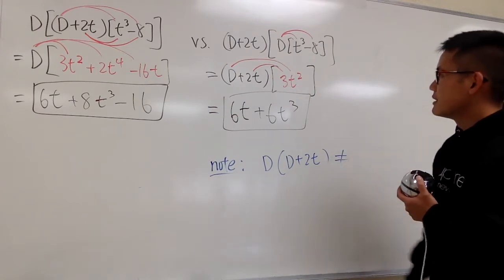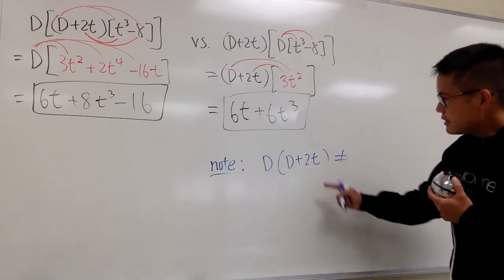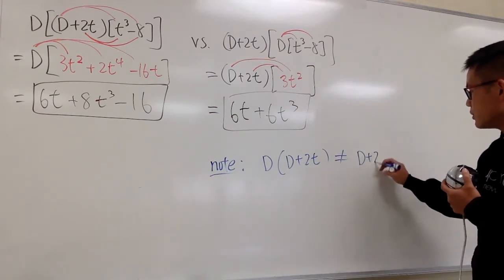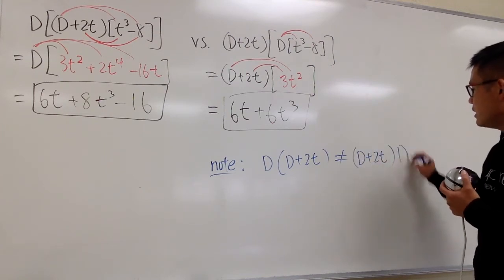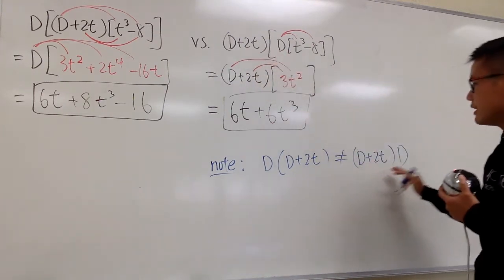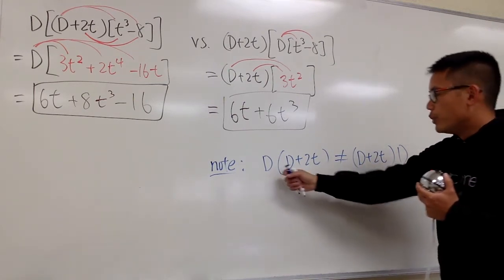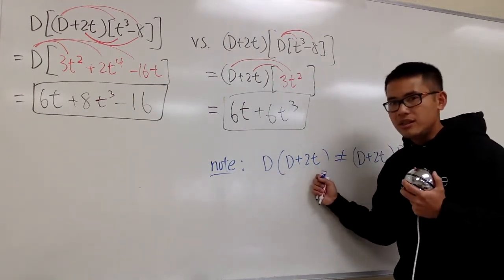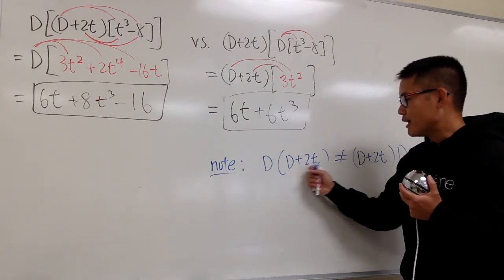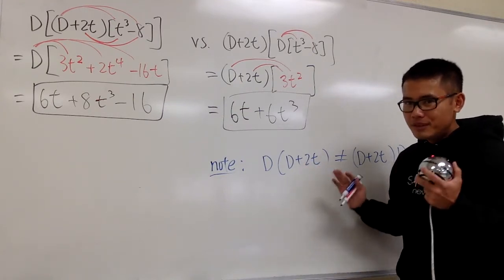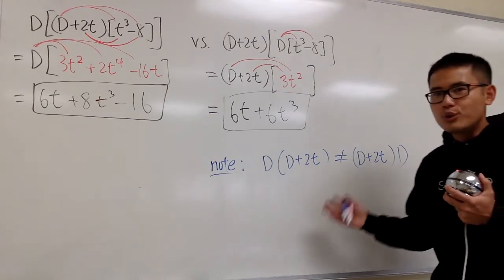This is not the same as if you switch them. This is not the same as saying (D plus 2T) times D. The reason they are not the same is because we contain a variable T in our operator. This is very different than the one I showed you in the previous video.